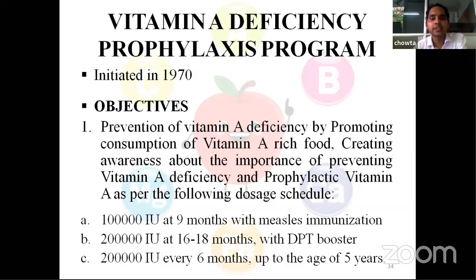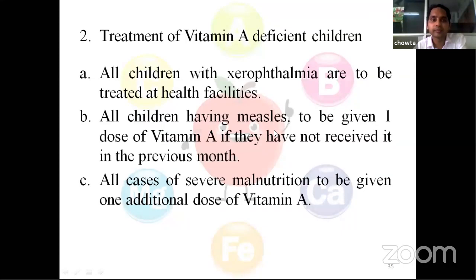Next is the Vitamin A Deficiency Prophylaxis Program, initiated in 1970. Its objectives are prevention of vitamin A deficiency by promoting consumption of vitamin A rich foods, creating awareness about the importance of preventing vitamin A deficiency, and providing vitamin A as per the following dosage schedule: 1 lakh international units at nine months with measles immunization; 2 lakh international units at 16 to 18 months with DPT booster; and 2 lakh international units at the age of five years. All children with xerophthalmia are to be treated at health facilities. Children having measles should be given one dose of vitamin A if not received in the previous month. All cases of severe malnutrition should be given one additional dose of vitamin A.